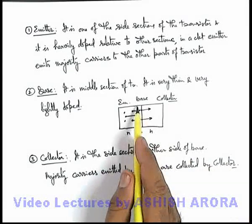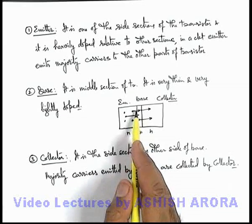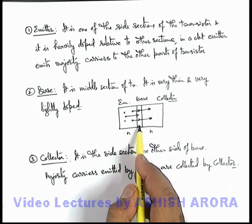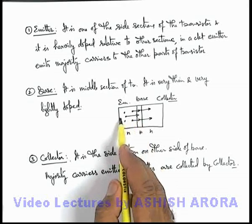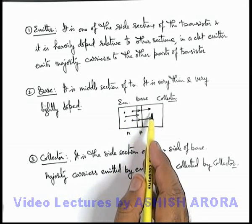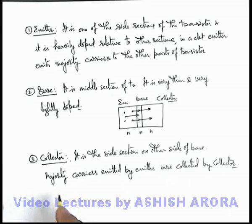The reason we have already discussed, as base is lightly doped, very few majority carriers are present here. So most of the carriers which are emitted by emitter will pass through the base toward the collector. And always remember there are few important facts about a transistor, and the most important thing I am writing here which we are going to discuss in detail in coming sections of the topic.